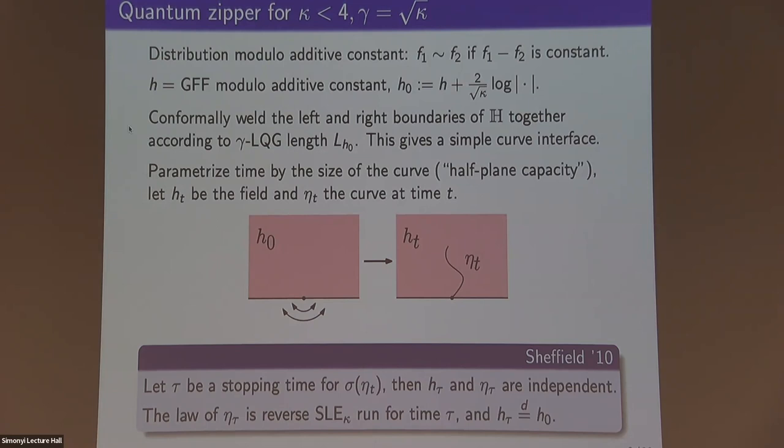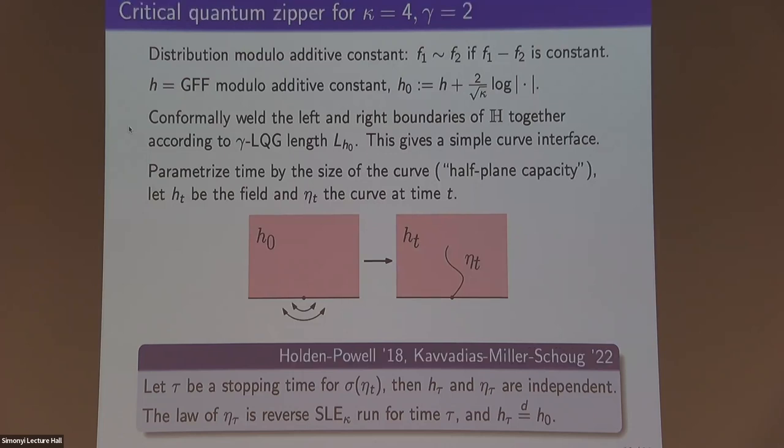Here I emphasize that h_t is a distribution modulo additive constant, so we haven't yet chosen a way to tie down this additive constant.